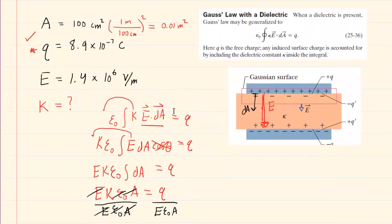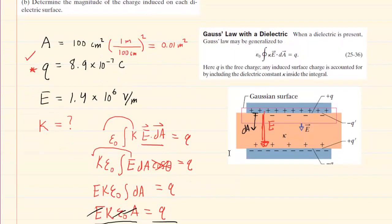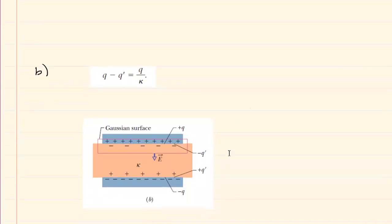We now move on to part B of the question, which asks us to determine the magnitude of the charge induced on each dielectric surface. Now we can see that we have that dielectric material colored in orange. The upper plate is positive, and what that does is it pulls electrons towards it, and so you get this accumulation of negative charge near that upper positive plate.